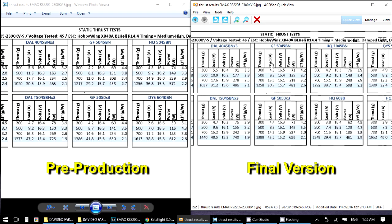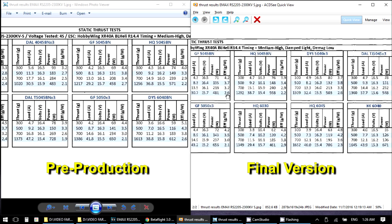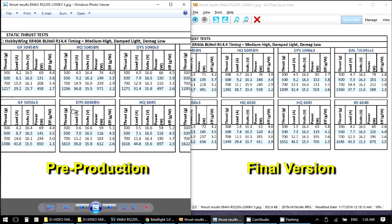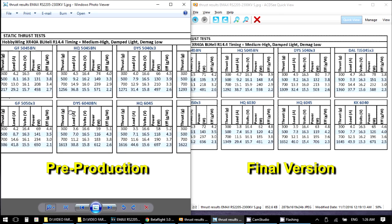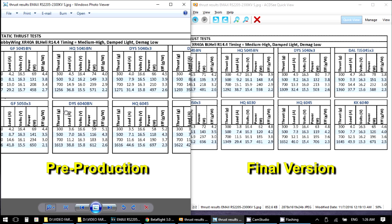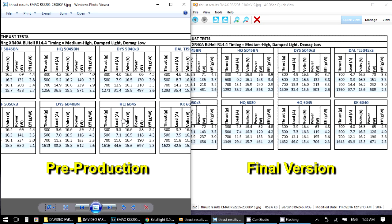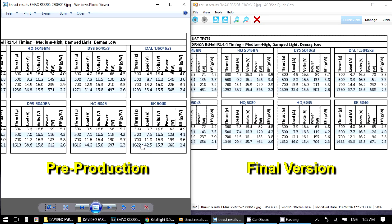On the Genfan 5045 you can see it's roughly around 40 more grams. On the 5040x3 prop we're looking at about 30 more grams of thrust. On the larger props we're seeing about 20 to 25 grams more.